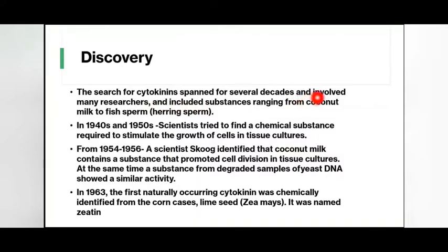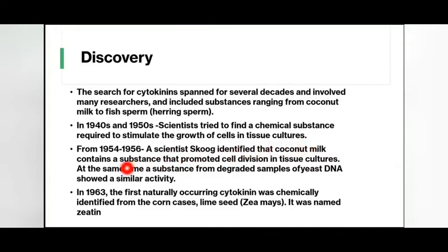Regarding the discovery of cytokinins: the search for cytokinin spanned several decades and involved many researchers, including substances ranging from coconut milk to fish sperm. In the 1940s and 1950s, scientists tried to find a chemical substance required to stimulate the growth of cells in tissue cultures. From 1954 to 1956, scientist Skoog identified that coconut milk contains a substance that promoted cell division. At the same time, a substance from degraded samples of yeast DNA showed similar activity. In 1963, the first naturally occurring cytokinin was chemically identified from corn kernel liquid endosperm and was named zeatin.